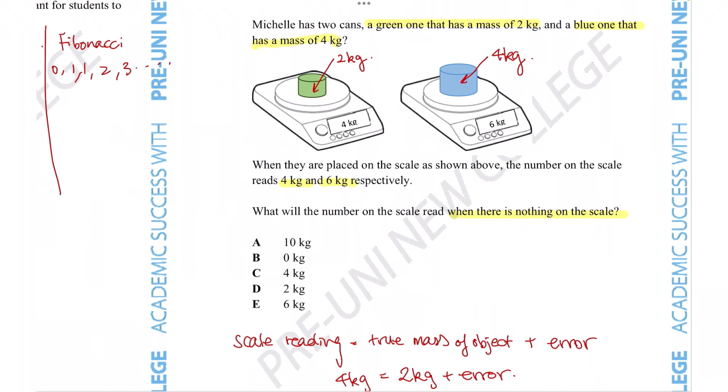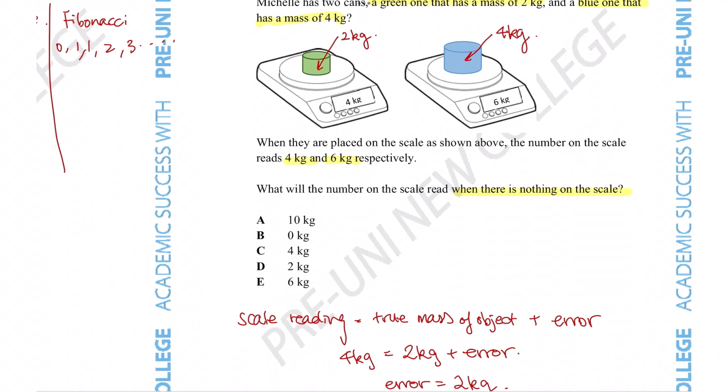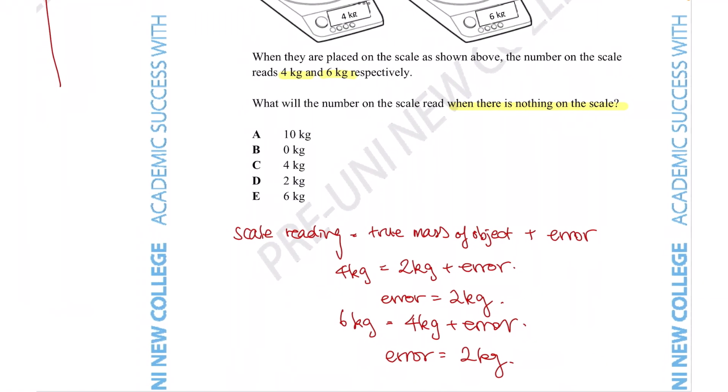So that's going to be the amount that's going to be read on the scale even when nothing is placed upon it, since that is what we calculated to be the error. So that means the correct response has to be option D for 2 kg.